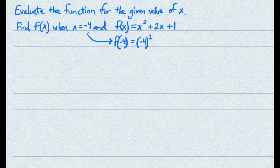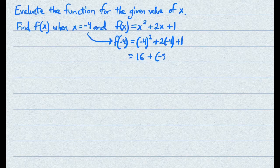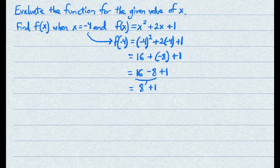So going back to the question, make sure you keep the negative numbers in parentheses. That gives you negative 4 squared plus 2 times negative 4 plus 1. When you simplify, you get 16 plus negative 8 plus 1, which is 16 minus 8 plus 1. 16 minus 8 becomes 8, and then plus 1, so you have 9. And that's your answer.